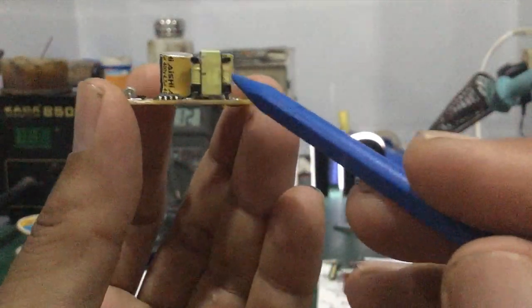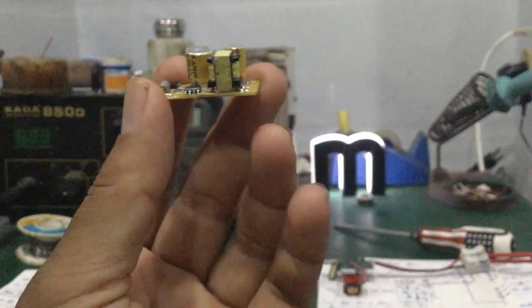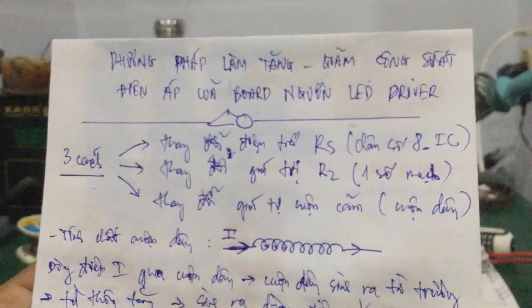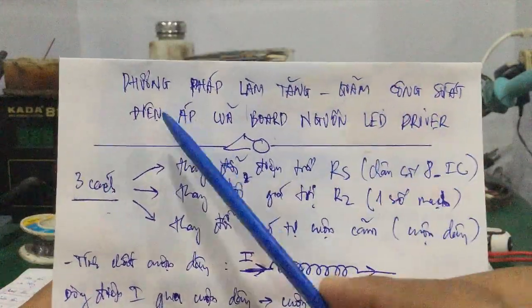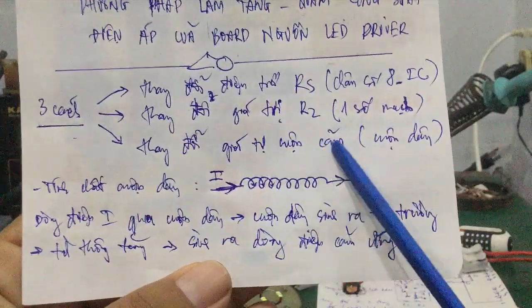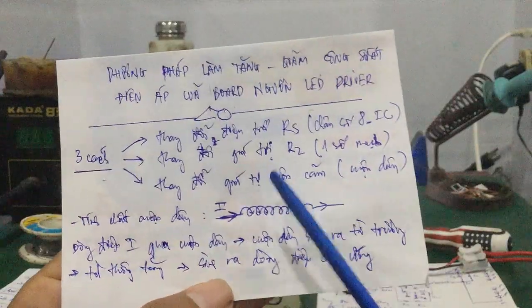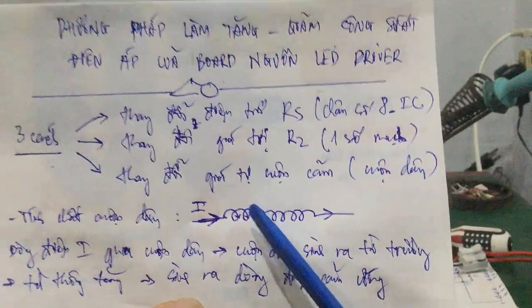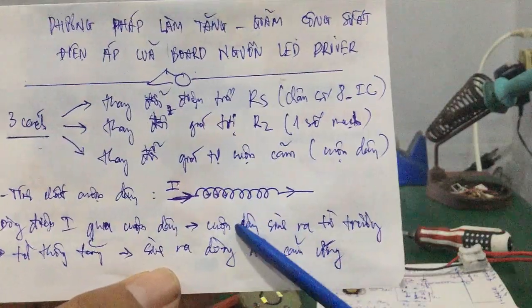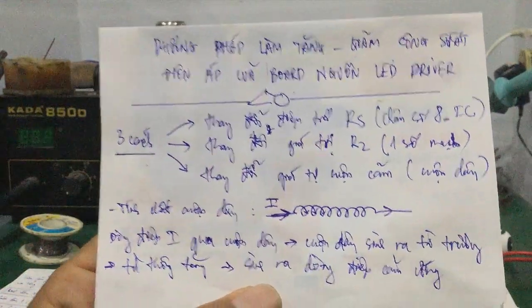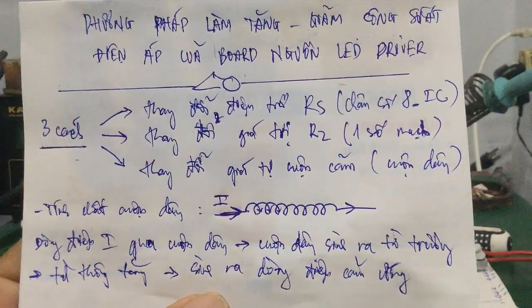Như vậy trong video này mình đã hướng dẫn các bạn cách tăng giảm công suất và điện áp của bộ nguồn LED driver bằng cách thay đổi giá trị cuộn cảm - cuộn dây bên trong mạch nguồn LED driver. Video này đến đây kết thúc. Các bạn có ý kiến thắc mắc gì, các bạn để lại comment dưới video, mình sẽ hỗ trợ cho các bạn. Hẹn gặp lại trong video kế tiếp, chào các bạn.